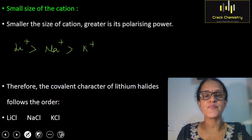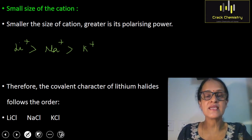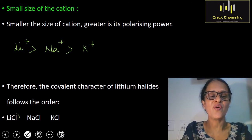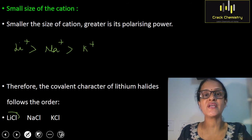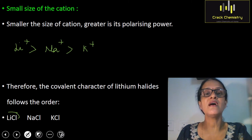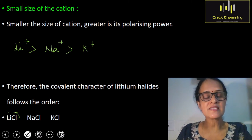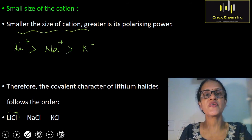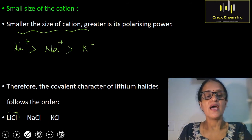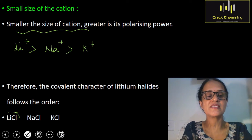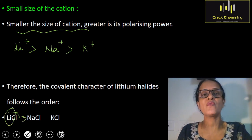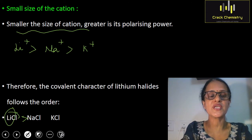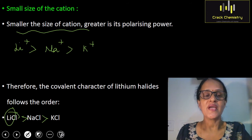Similarly, consider three compounds: LiCl, NaCl, and KCl. In all these compounds, the anion is the same — the chloride ion. Smaller the size of the cation, greater will be its polarizing power. The smallest cation is lithium, so LiCl will be more covalent than NaCl, and NaCl will be more covalent than KCl.